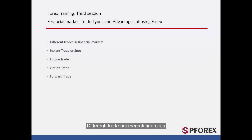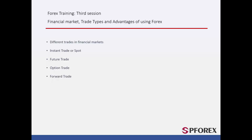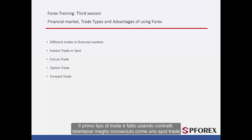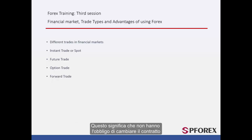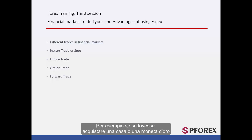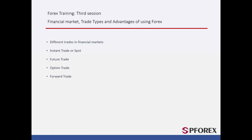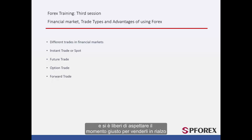Different Trades in Financial Markets: There are a variety of different trades that can be made within financial markets. The first type of trade is made using Instant Contracts, better known as a Spot Trade. In this type of contract, the goods being traded are at the owner's discretion, meaning they have no obligation to change the contract or their position within the trade. For example, if you are to buy a house or a gold coin, it is down to you how long you hold on to these items, and you are free to wait for the right time to sell them on.